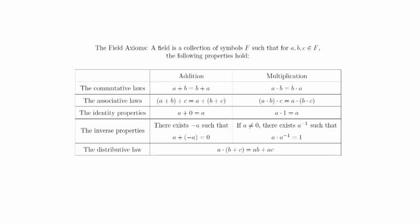A field is a collection of symbols F such that for A, B, C in F, the following properties hold. The word field is a special mathematical term that you might have seen in a course like Abstract Algebra. However, for this section, we'll be focusing on the names of the properties: